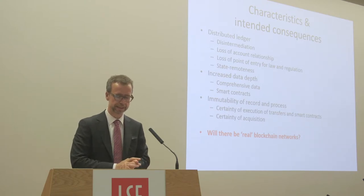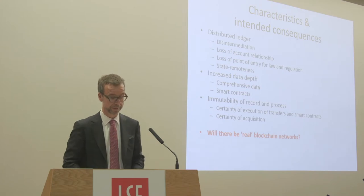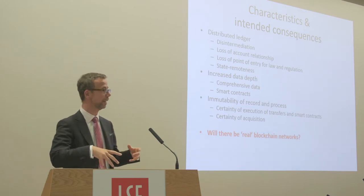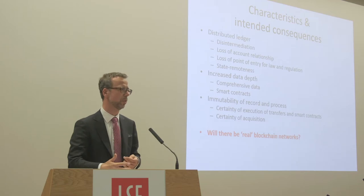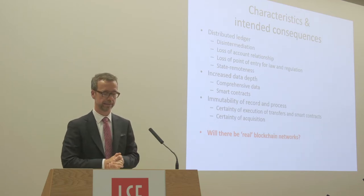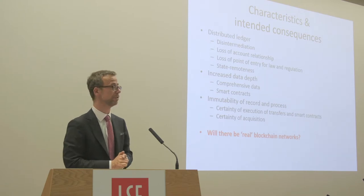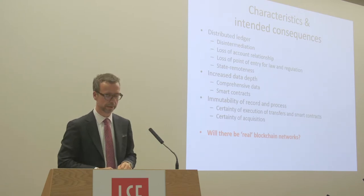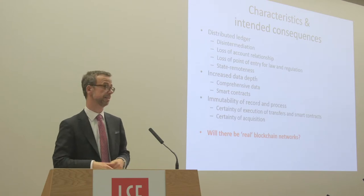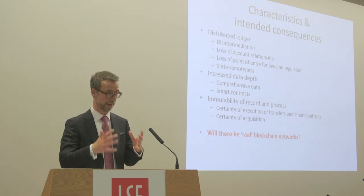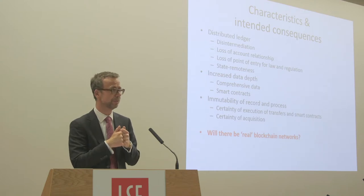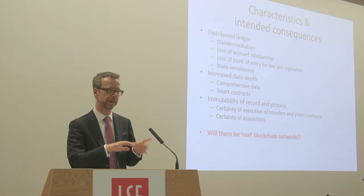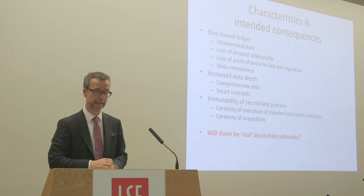The third characteristic is the immutability of the record and also of the process — you have the certainty of execution. Once a transaction is initiated, you have the certainty of execution of transfers, like in Bitcoin, or of smart contracts, like in the Ethereum context. And that also means, because somehow code is law — and we are going to come back to that — it means you have a certainty to acquire. You have it, you see it, it's yours. From the logic, it means there is no danger for you to lose it again. It's finished, it's final. And the word final has a specific meaning which we will see a little bit later.